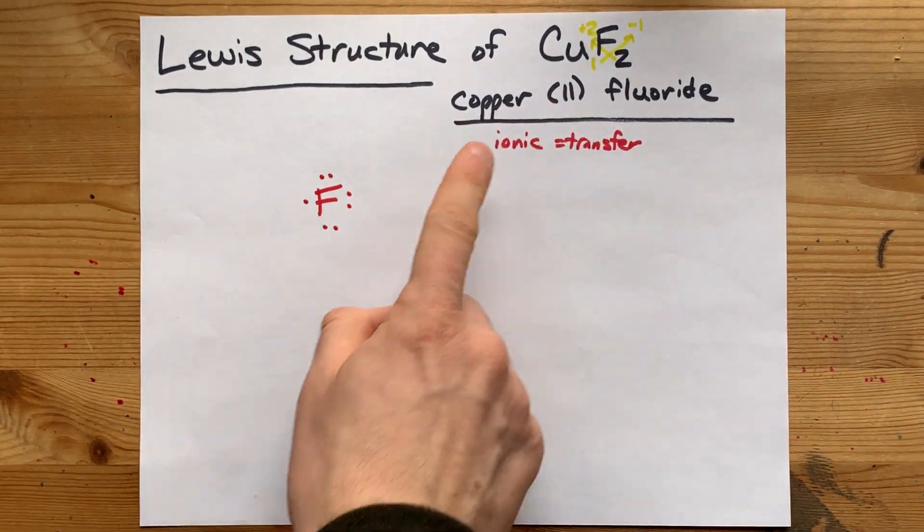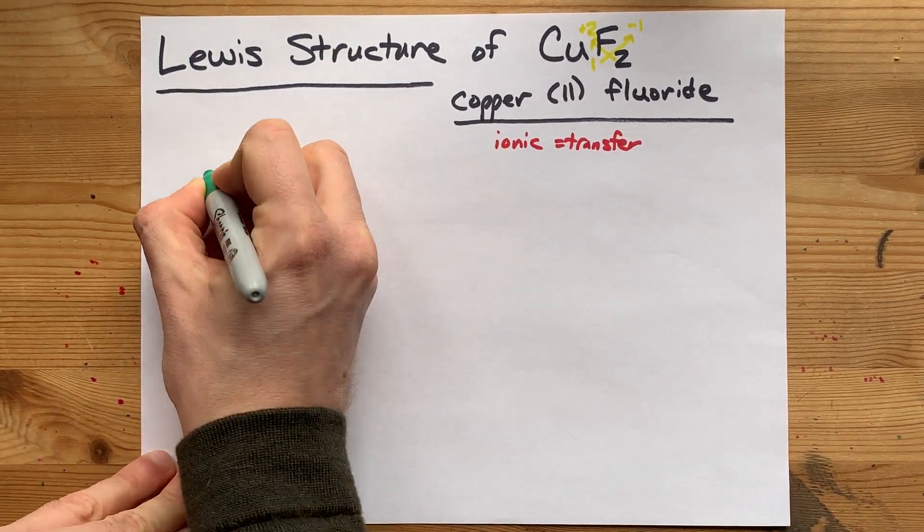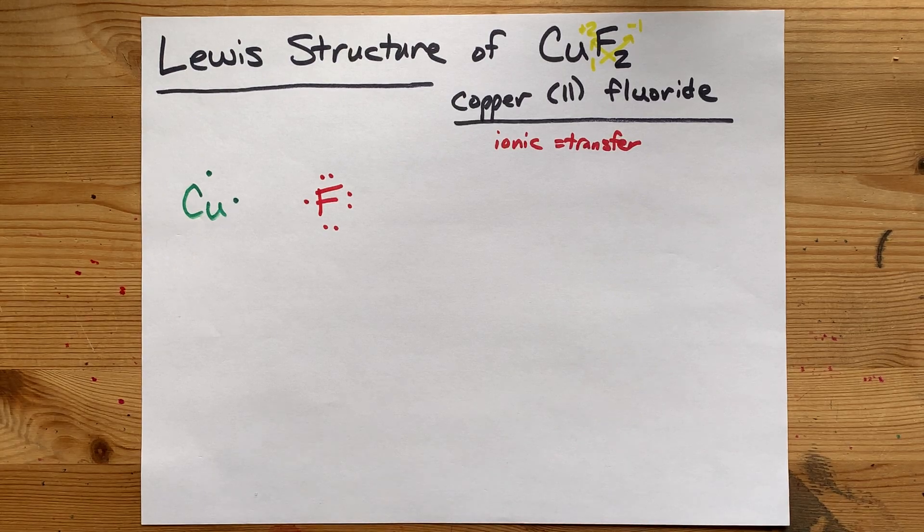Anyways, either way, copper has a charge of positive 2, so I want you to draw yourself a copper with 1, 2 valence electrons.